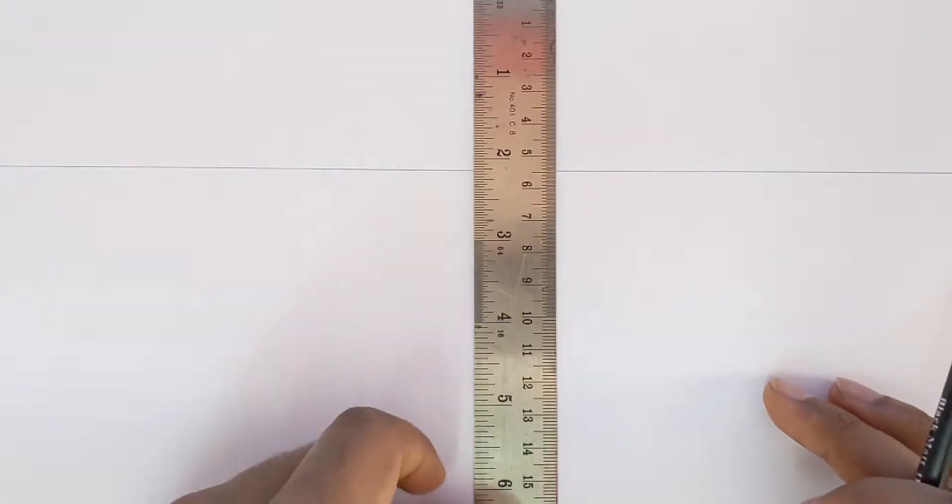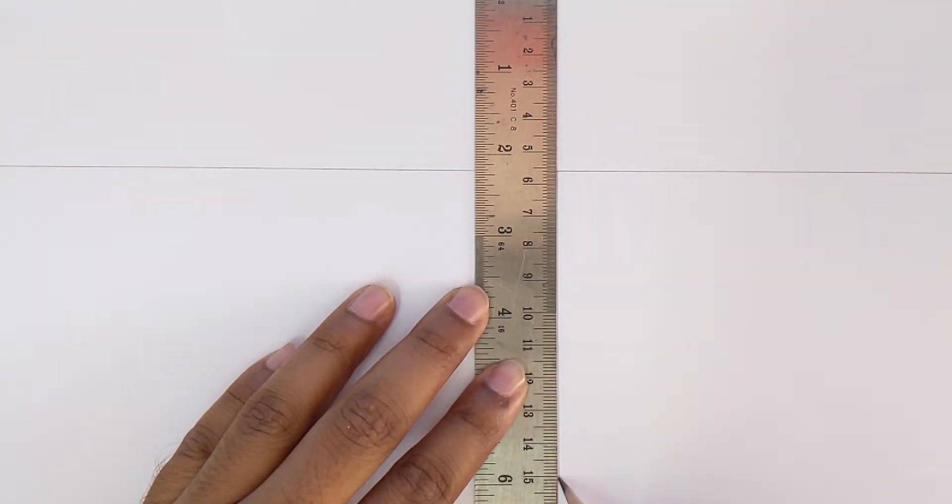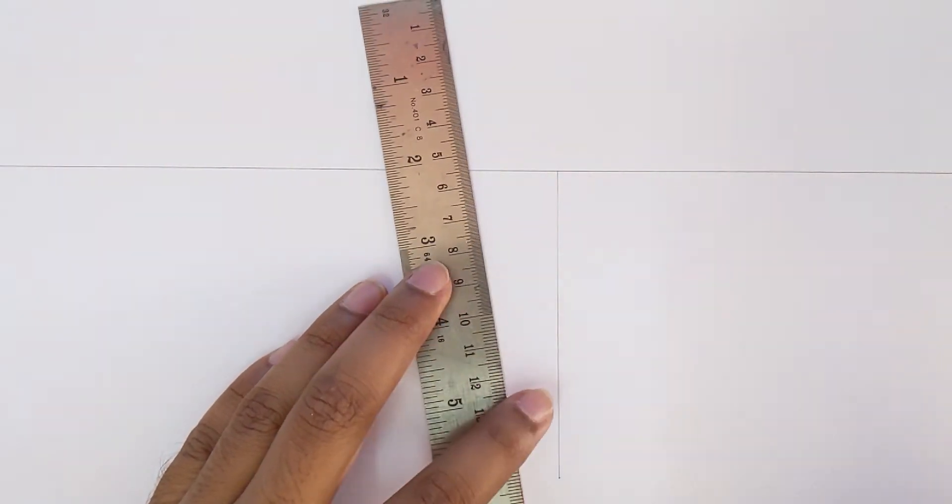Next we are going to drop in a vertical of any desired height. This point is going to be our station point. Now don't worry too much about these terminologies, otherwise it will get very complicated. Just try to follow along.